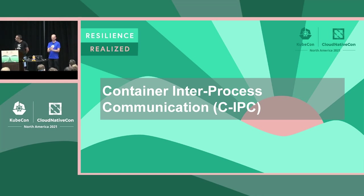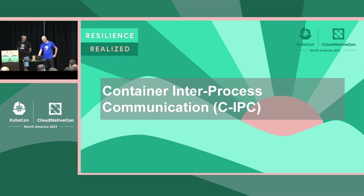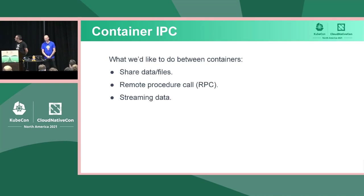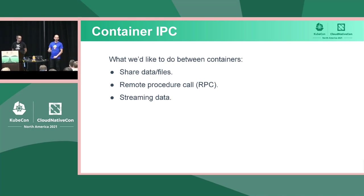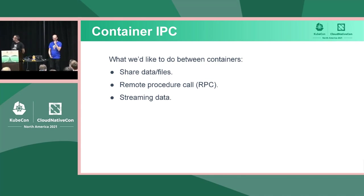Container IPC — or CIPC. Why would we want to do container IPC? Typically it's about sharing data between two containers. For example, you want to download a file from S3 and make it available to the main container, or do remote procedure calls between containers, or stream data like getting messages from Kafka and providing them to the main container. There are quite a few different use cases.